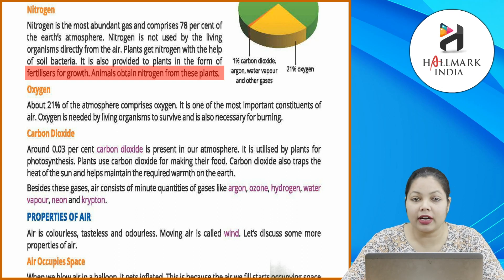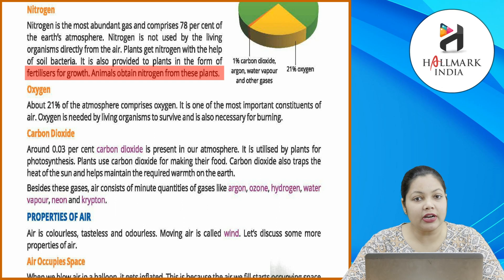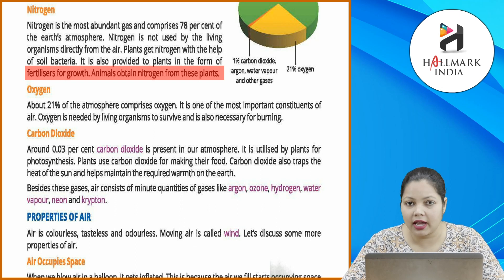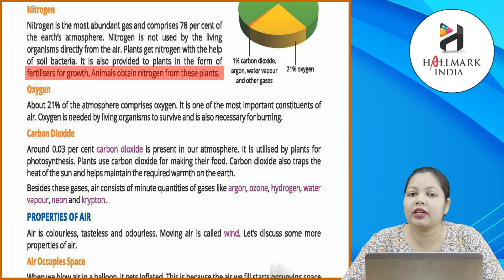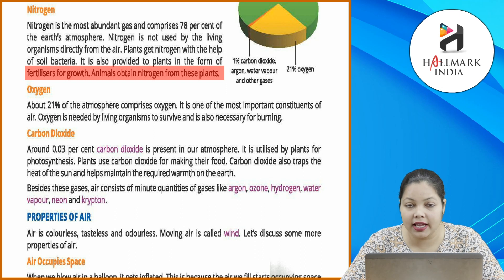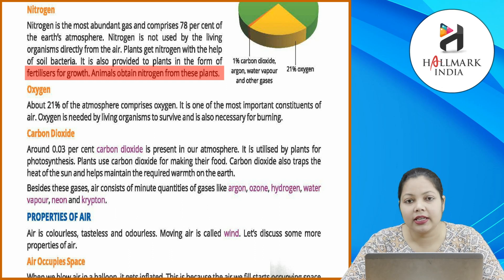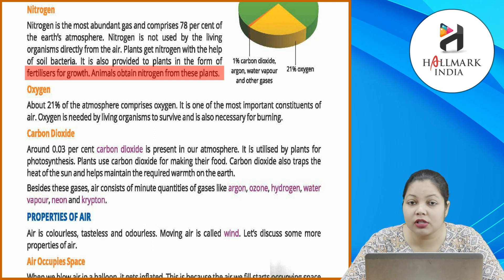Nitrogen jo hai, atmosphere ka sabse bada part hai — 78% jo hai, nitrogen hai atmosphere mein. Sabse zyada nitrogen payi jaati hai atmosphere mein, lekin humen ye directly nahi milti. Jo aapke plants hain, unhe nitrogen kaise milti hai? Soil ke through milti hai — yeh as a fertilizer kaam karti hai. Aur animals ko plants ke through milti hai.